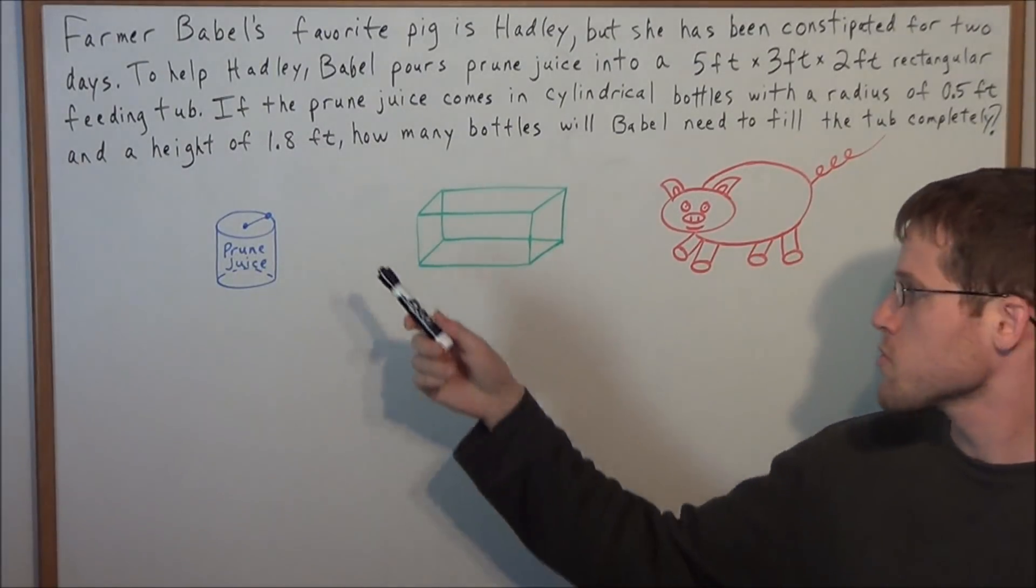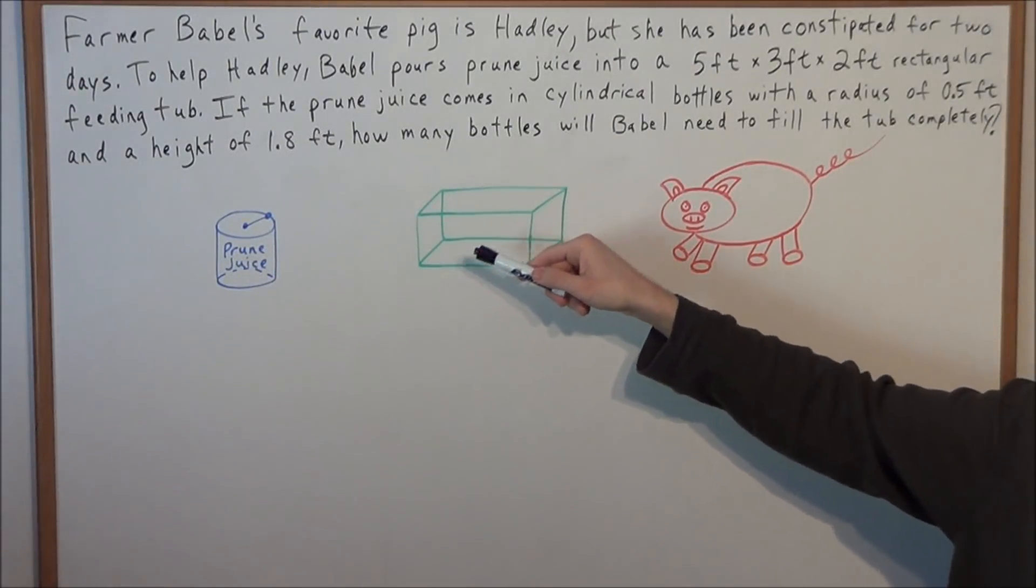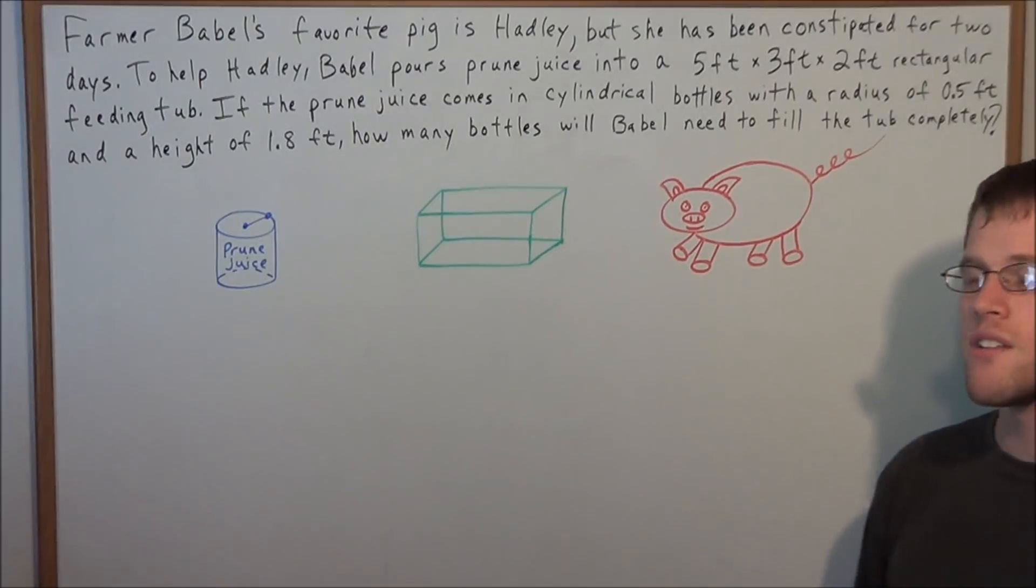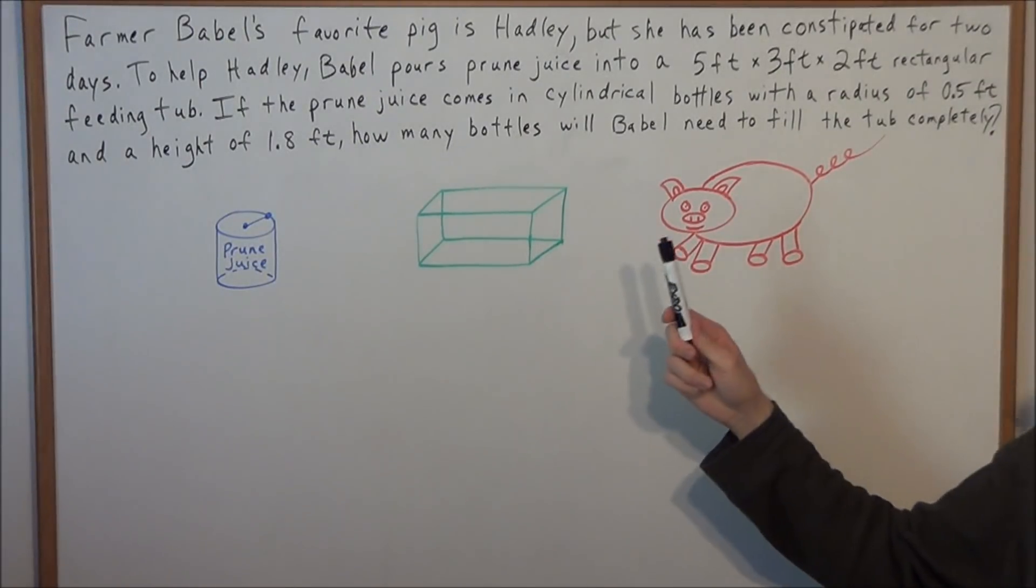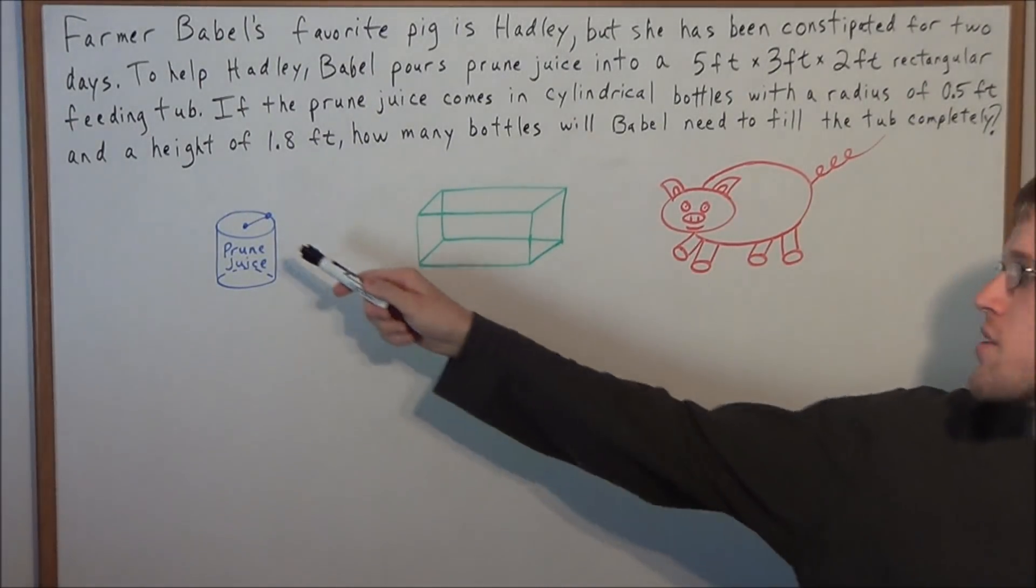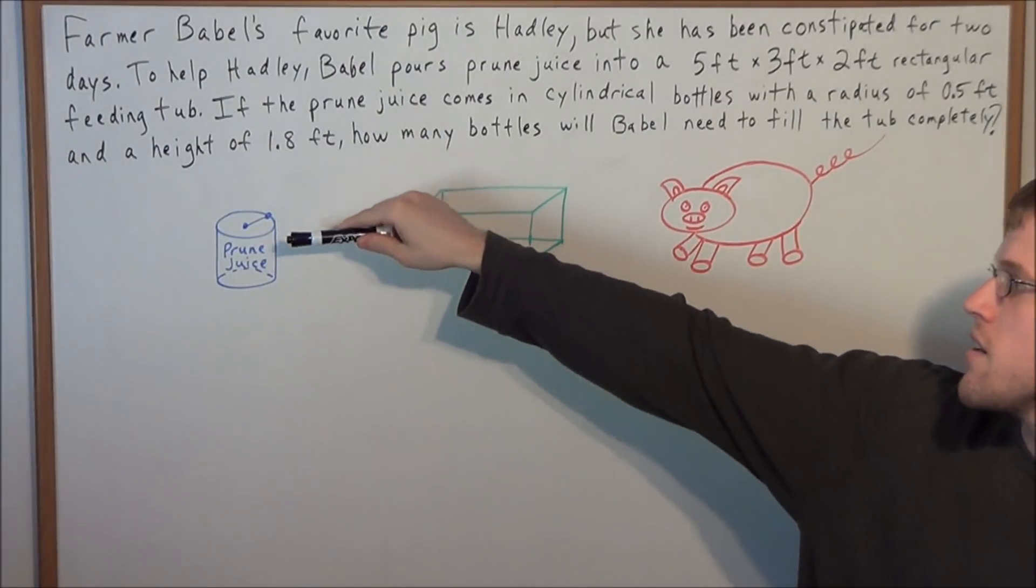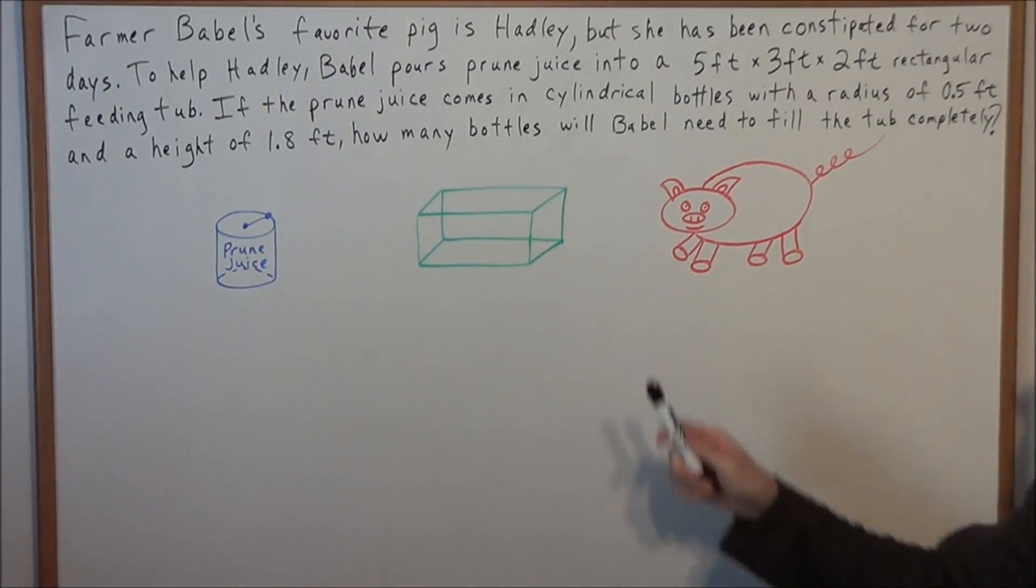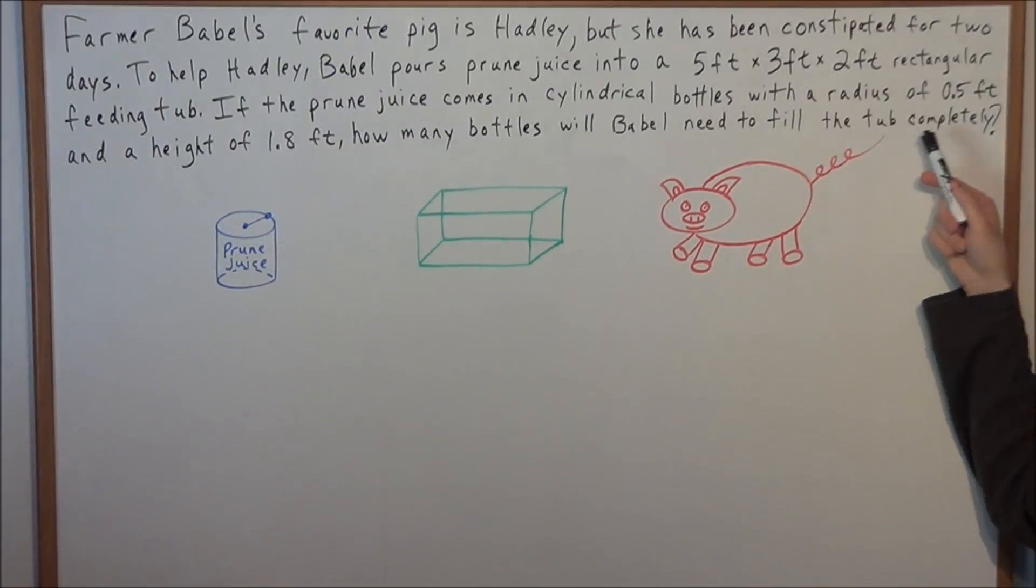To help Hadley, Babel pours prune juice into a 5 by 3 by 2 foot rectangular feeding tub. If the prune juice comes in cylindrical bottles with a radius of 0.5 feet and a height of 1.8 feet, how many bottles will Babel need to fill the tub completely?